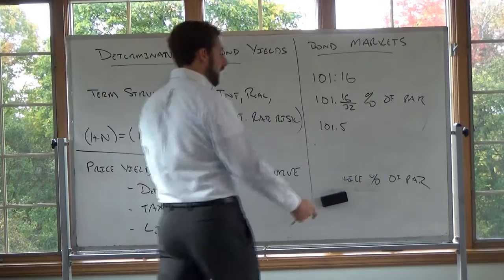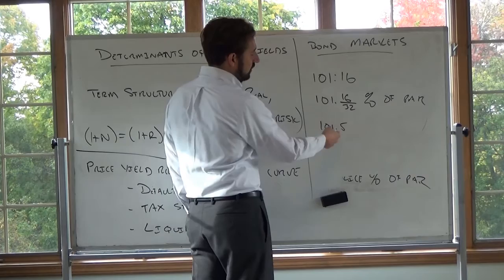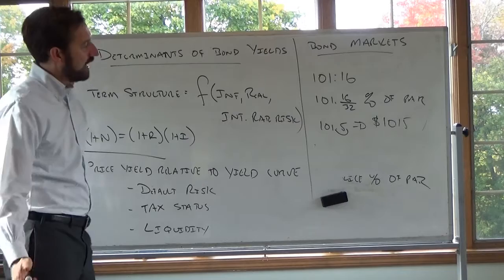Par value is 1,000, so to convert: move the decimal, giving 1.015, then multiply by 1,000 — which has the effect of just moving the decimal place over by one. This implies the bond is $1,015. That's how we quote treasury bonds.